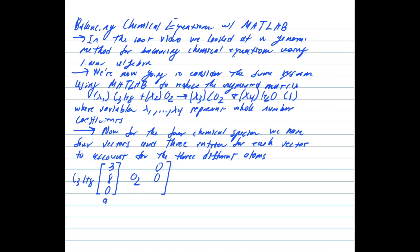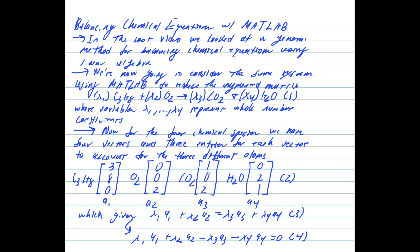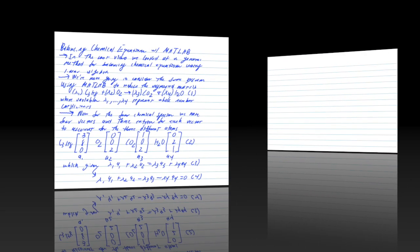And we have column vectors A1 through A4, and this is going to represent each one of the molecules. We have C3H8, O2, CO2, and H2O. Combining these two types of information, so we have the coefficients represented by the variables X1 through X4, and then we have the matrices for the molecules A1 through A4. We get the equation X1A1 plus X2A2 equals X3A3 plus X4A4. And then we can rewrite that as X1A1 plus X2A2 minus X3A3 minus X4A4 is equal to zero.